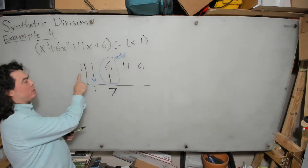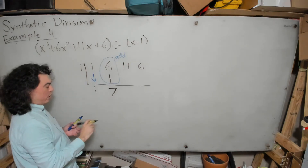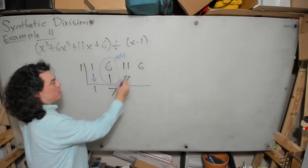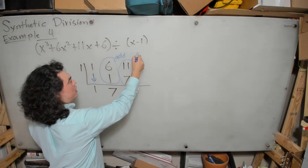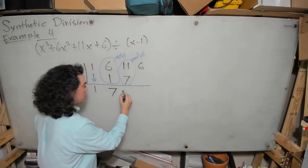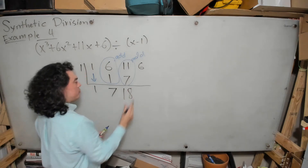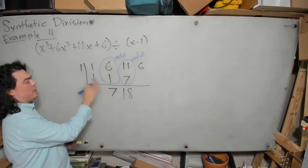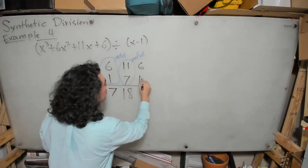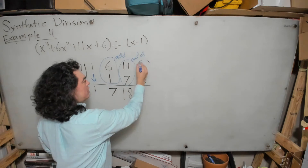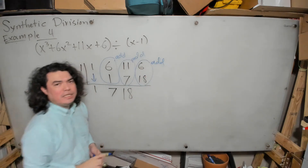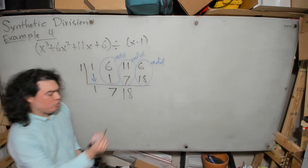Then we ask: what is 1 times 7? That's 7. We place that value here, then we add: what is 11 plus 7? That's 18. Then we ask: what is 1 times 18? That's 18. We place that result here and add. What is 6 plus 18? That's 24.